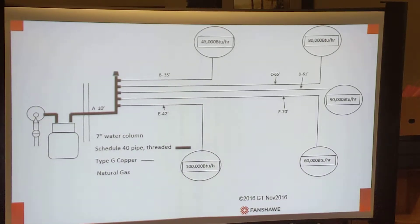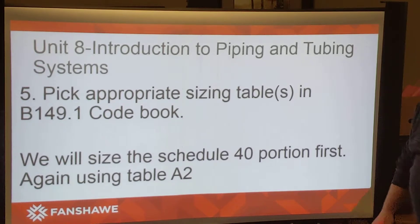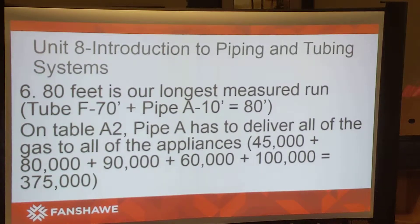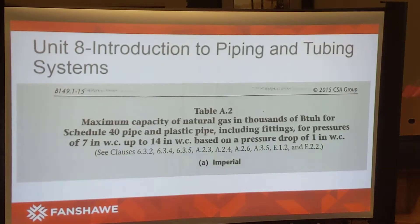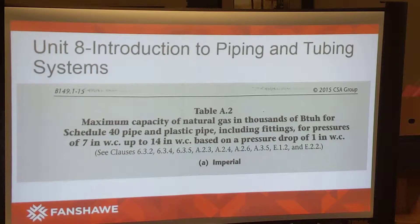We're going to pick the appropriate tables as indicated in the B149.1 codebook. The first portion we're going to size is the schedule 40 portion, so we're going to use Table A2. Table A2 indicates the maximum capacity of natural gas in thousands of BTUs per hour for schedule 40 pipe and plastic pipe, including fittings, for pressures from 7 to 14 inches water column based on a pressure drop of one inch water column.